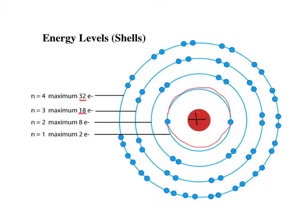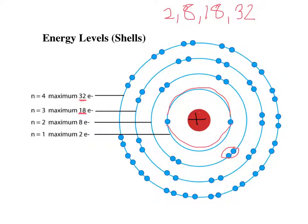Electrons are negative and repel each other, but they can fit together in little orbitals because they have different spins — we won't go into that in this course. The main thing to be aware of is: the first shell holds 2, the second shell holds a maximum of 8, the third shell holds a maximum of 18, and the fourth shell holds a maximum of 32.